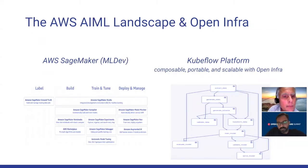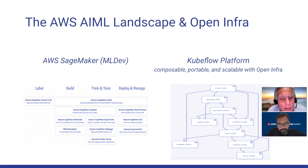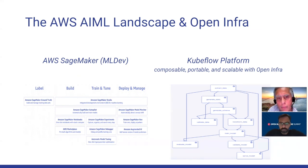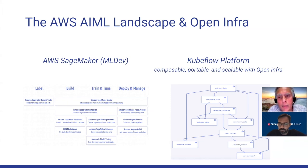AWS offers SageMaker, an ML development tool where you label, build in studio, train, tune, and deploy models. A similar open-source alternative is Kubeflow, which runs on any Kubernetes cluster. Kubeflow extracts data, generates schema, transforms data, trains the model, validates it, and serves it. The goal here is to show how the AWS ML landscape can be applied to open infrastructure.